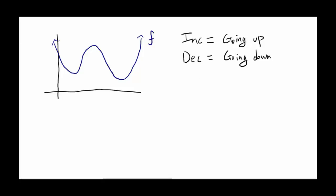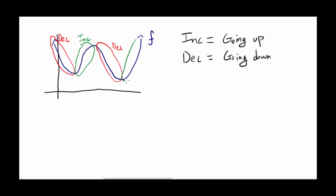In this case, the function is decreasing from here to here. The function is also decreasing from here to here because it's going down. And the function is increasing from here to here — it's going up — and the function is increasing from here to here as well.